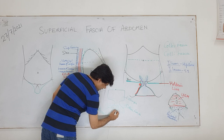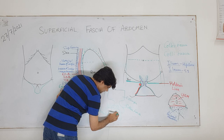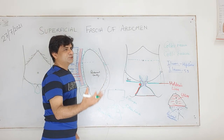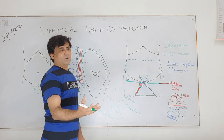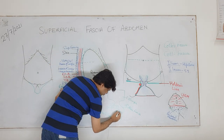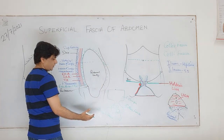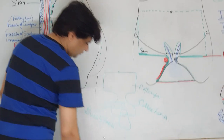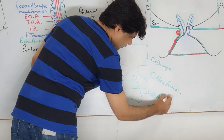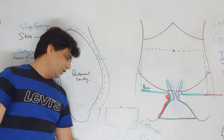Similarly there is one more extension - the scrotum. Remember the left testis is more lower placed than the right. This continuation of Colles' fascia in the scrotum is called Colles' fascia here also.